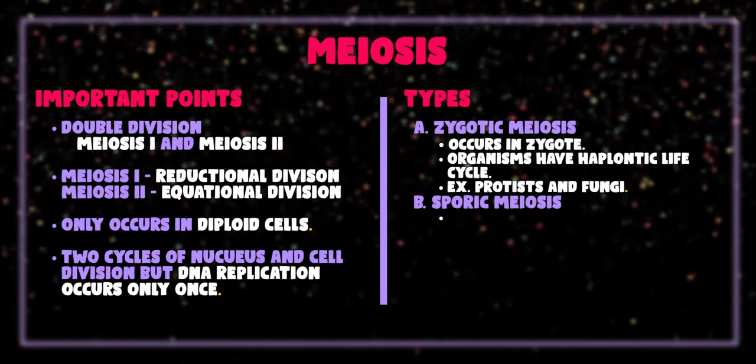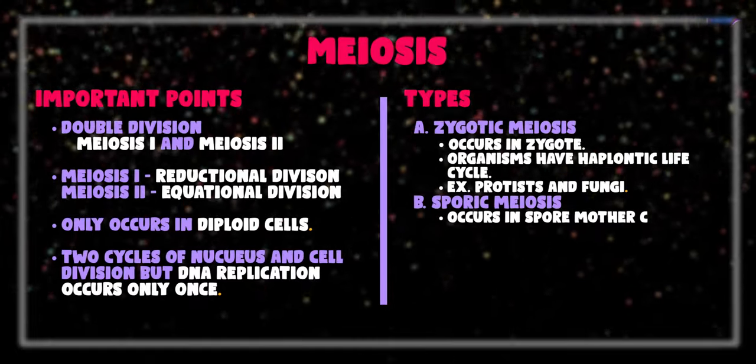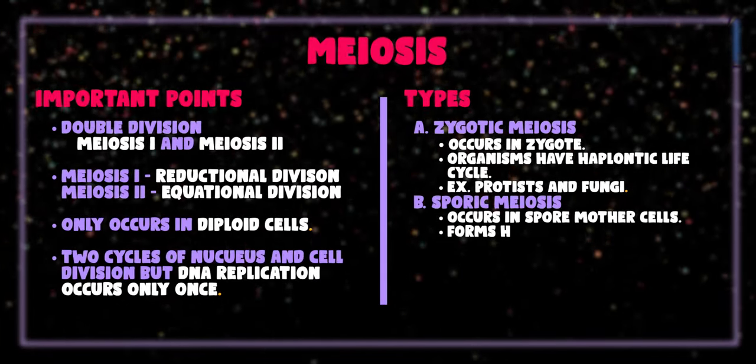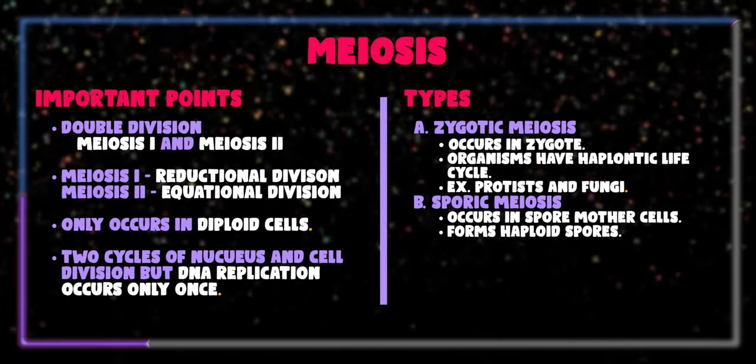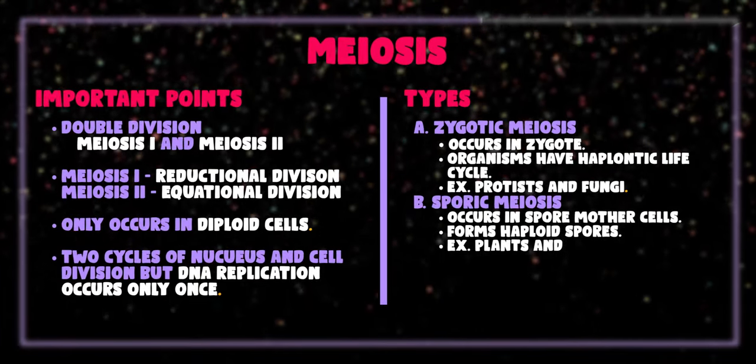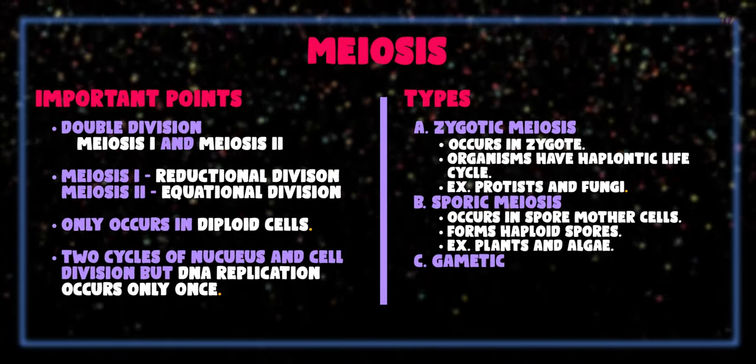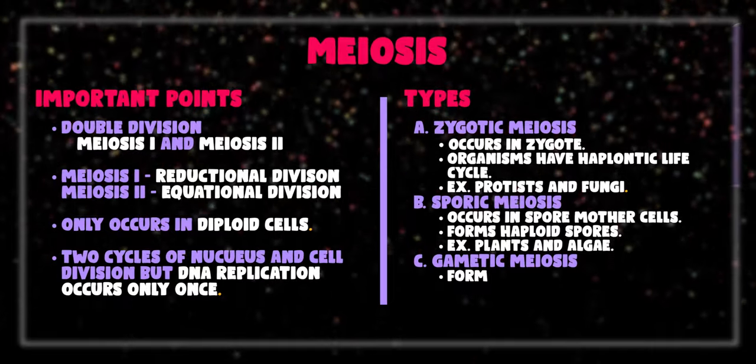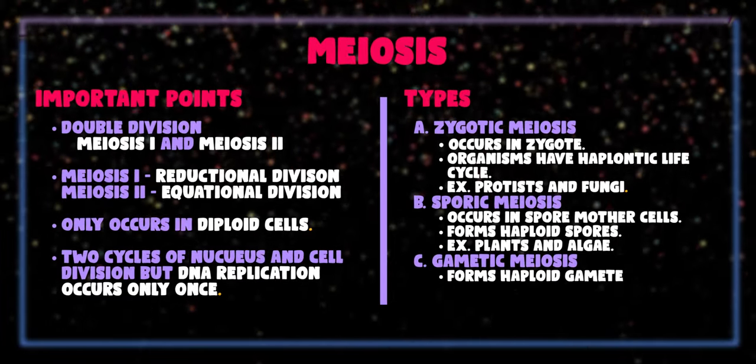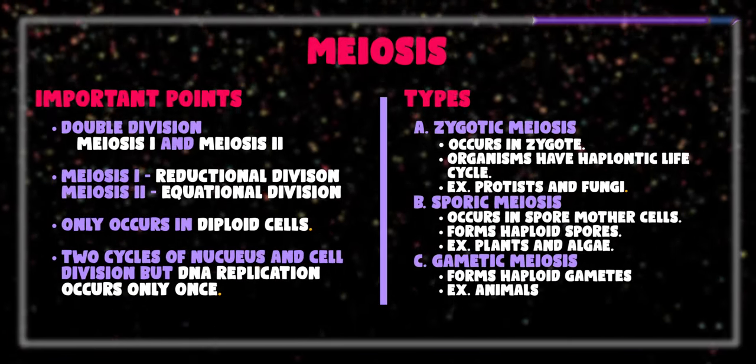Second type is sporic meiosis, which occurs in spore mother cells and results in formation of haploid spores. For example, plants and some algae. The third type is gametic meiosis, which results in formation of haploid gametes. All animals and most protists show this type of meiosis.